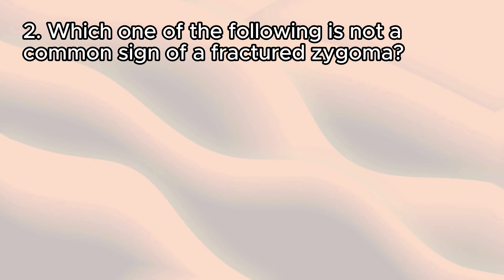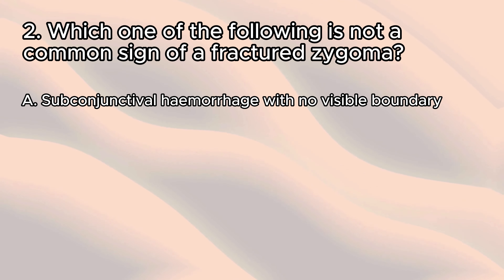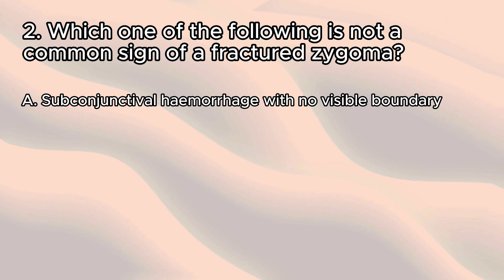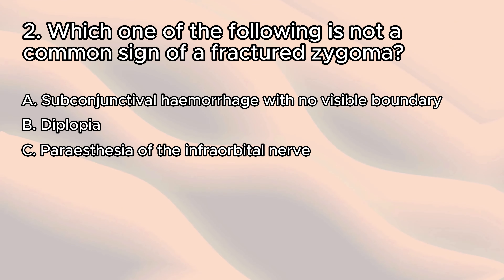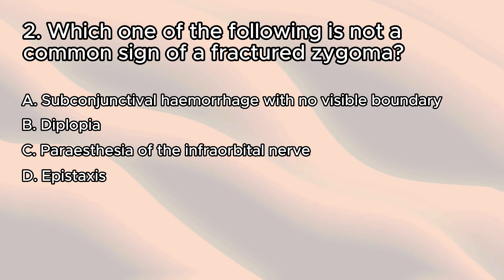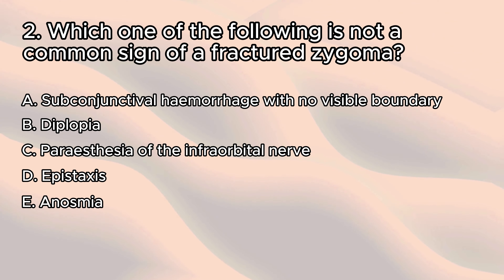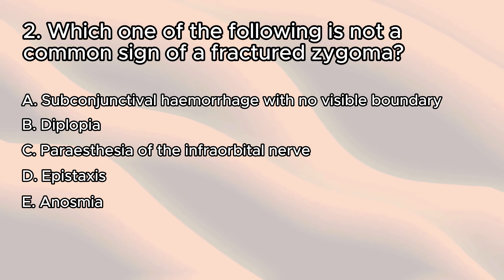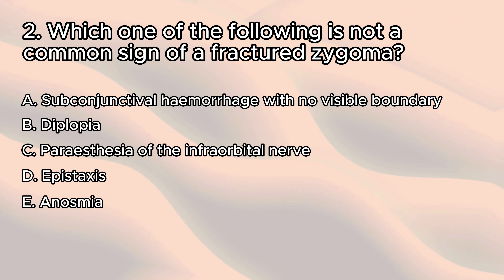Question two: which one of the following is not a common sign of a fractured zygoma? a) Subconjunctival hemorrhage with no visible boundary, b) diplopia, c) paresthesia of the infraorbital nerve, d) epistaxis, or e) anosmia. A fractured zygoma is a fractured cheekbone.